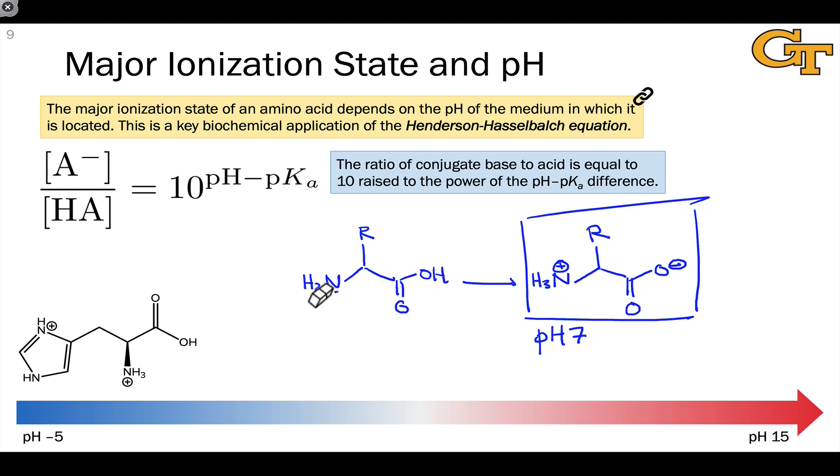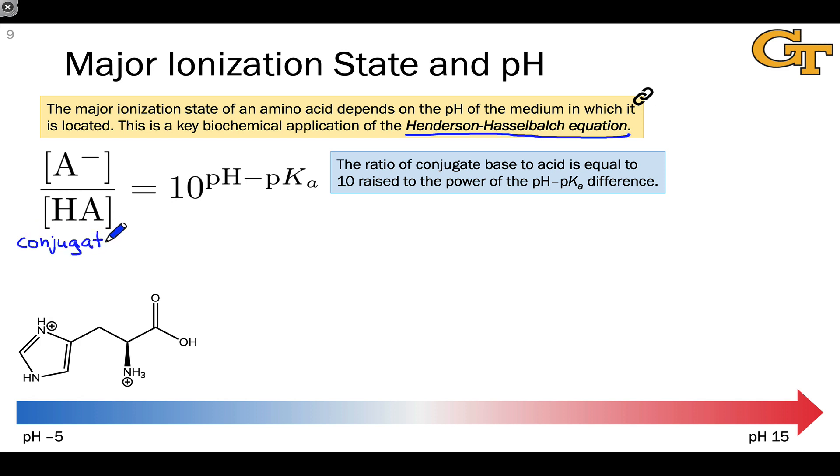More generally, to understand how the major ionization state depends on pH, we can return to an important equation that you learned in Chem 1211 or 1212 that is based on acid-base equilibrium, the Henderson-Hasselbalch equation. In words, this equation states that the ratio of conjugate base to conjugate acid, what we might call the conjugate ratio for any conjugate acid-base pair, is equal to 10 to the power of the difference between the pH of the medium, in other words the pH of the environment that the acid is dissolved in, and the pKa of the acid HA.